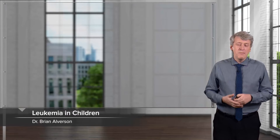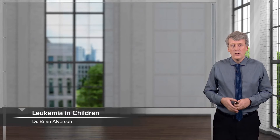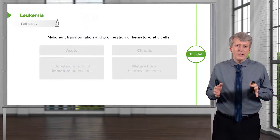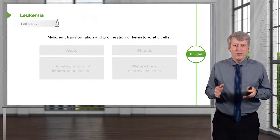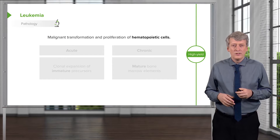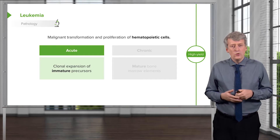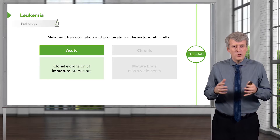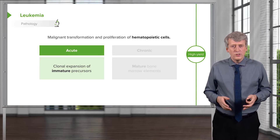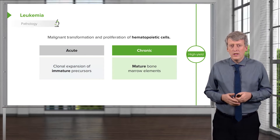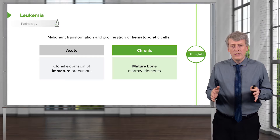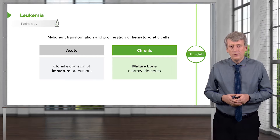In this lecture, we will review leukemia in children. Leukemia is the malignant transformation and proliferation of hematopoietic cells. We have acute leukemia, which is a clonal expansion of immature precursors, and we have chronic leukemia, which is mature bone marrow components that are becoming clonal.